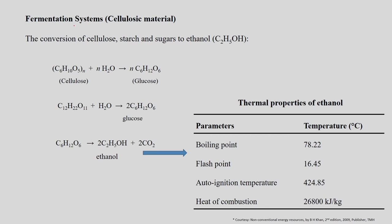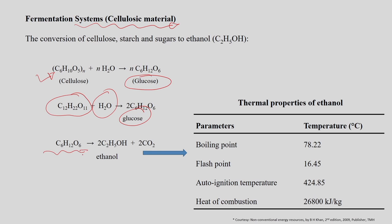In the fermentation system using cellulosic material, the cellular material is first hydrolyzed to produce glucose. The glucose — the simple monosaccharide molecule — undergoes fermentation to produce 2 moles of ethanol and 2 moles of carbon dioxide. Thus, 1 mole of glucose yields 2 moles of ethanol and 2 moles of CO2 during fermentation.